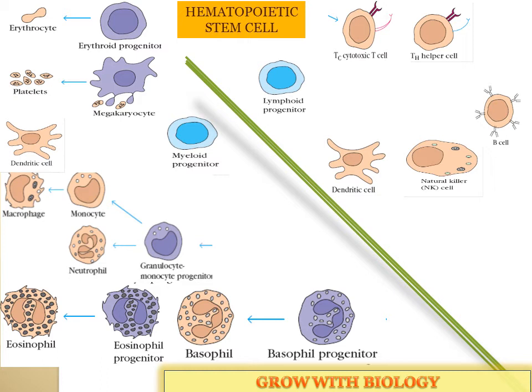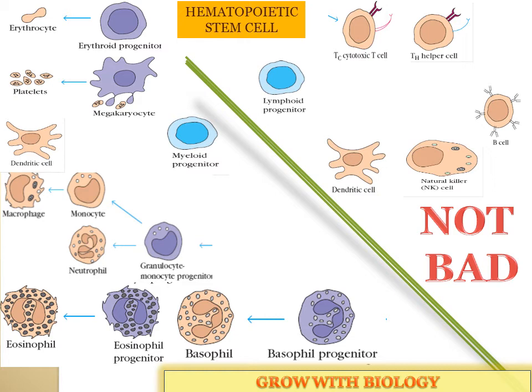All these cell names can be tough to remember when you are new to the subject, so here is a short form: NOT BAD. From 'NOT BAD', remember four letters — N, T, B, and D — the four corner letters. N is for Natural Killer cell, T is for T cell, B is for B cell, and D is for Dendritic cell. This helps you remember the four varieties of cells in the lymphoid progenitor.